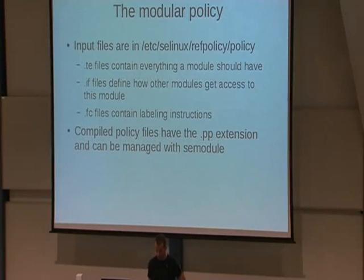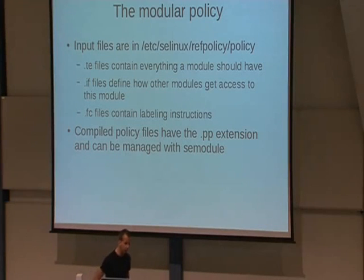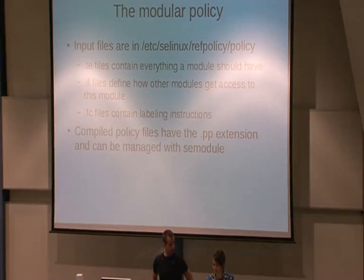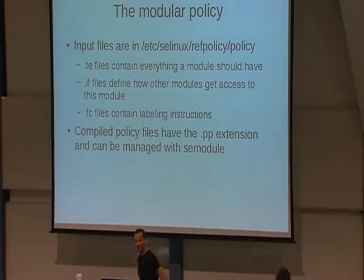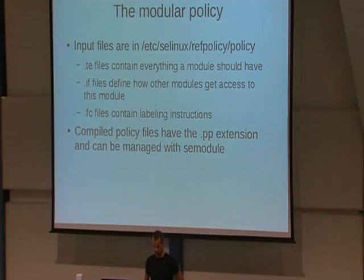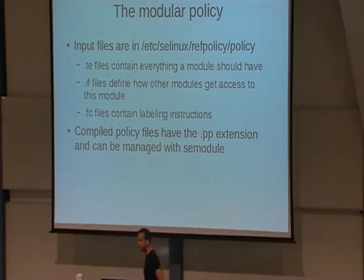If you want to enable SELinux on a distribution that doesn't have it by default, find yourself a policy and go tune it — that will take a lot of time. The best way of using a policy is a modular policy, which means — like a Linux kernel — there are different modules you can load and unload, making it very easy to work with. The pp file is a compiled policy file; you enable or disable them using the `semodule` command.